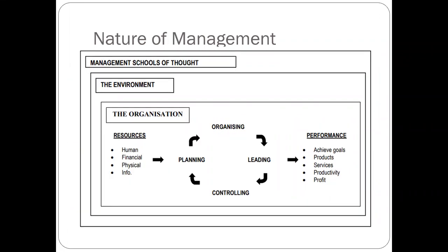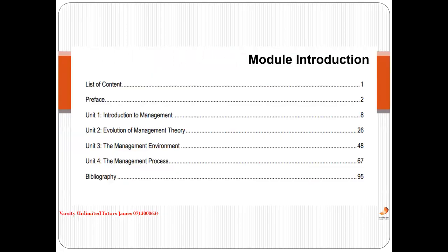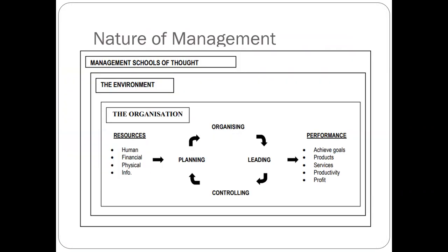Now let's talk about the nature of management. Unit two is Evolution of Management Theory, unit three is Management Environment, and unit four is Management Process. These three topics — management theory, management environment, and management process — are what you'll be learning throughout the whole semester. That is what management is about.